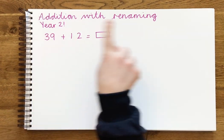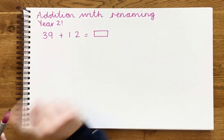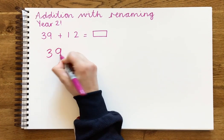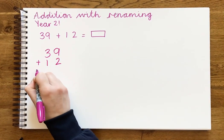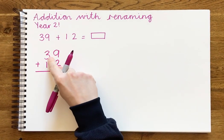So today we're going to be looking at addition with renaming. Our number sentence is 39 add 12 equals something. First we're going to put it into a column, so 39 add, and then line up your 12 so the 2 is under the 9, which is the ones column, and your 10 is under the 30, which is the tens column.